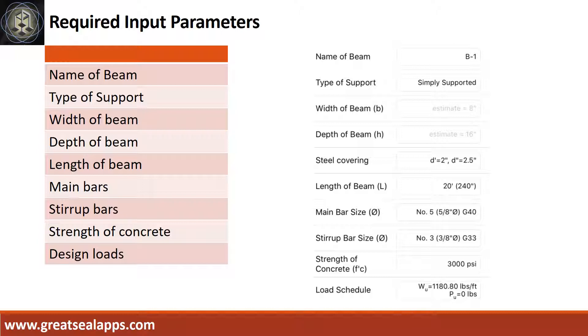Main bars, 5/8 inch diameter at grade 40. Stirrup bars, 3/8 inch diameter at grade 33. Strength of concrete, 3000 psi. And factored load is 1180.8 pounds per foot.